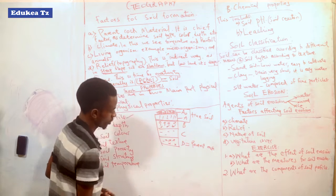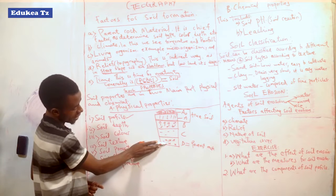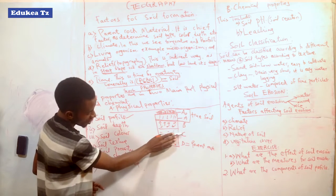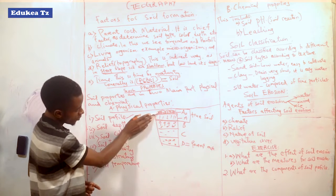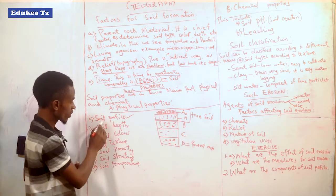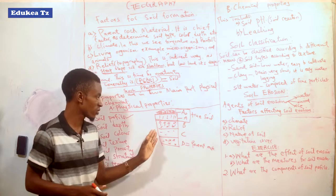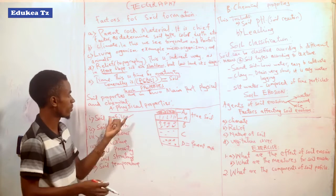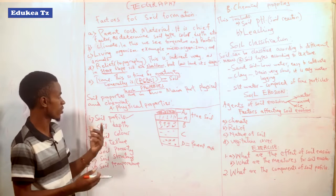Layer D is the parent rock. The arrangement of the soil from the topmost horizon A-O, through horizons A, B, C, and D — this arrangement is generally called the soil profile. Soil profile is among the physical properties of the soil, or features of the soil.